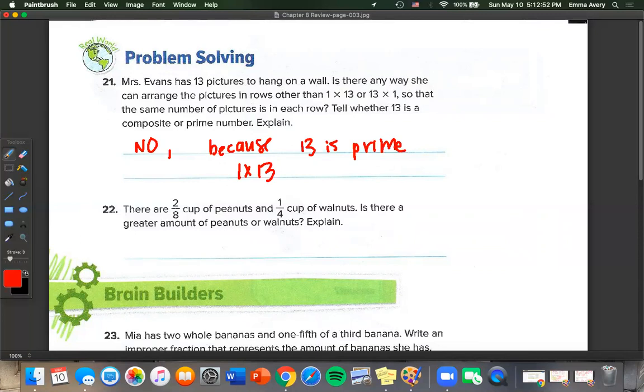Number 22. There are 2 eighths of cups of peanuts and 1 fourth a cup of walnuts. Is there a greater amount of peanuts or walnuts? So we have 2 eighths and 1 fourth. I know that if I multiply 4 by 2, I get 8. So we multiply 1 times 2 to get 2 eighths. So there is actually the same amount of walnuts and peanuts.